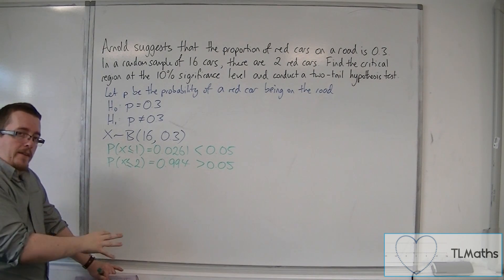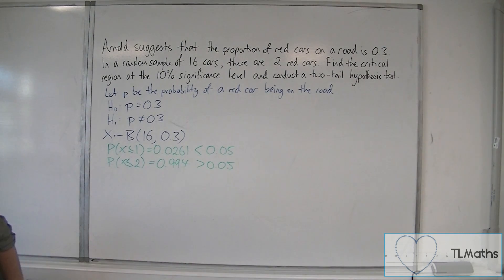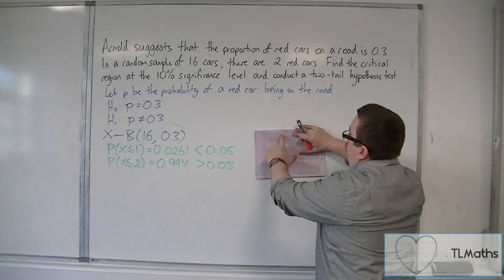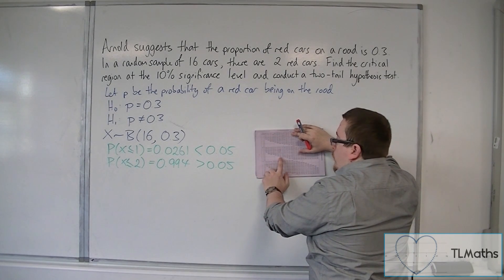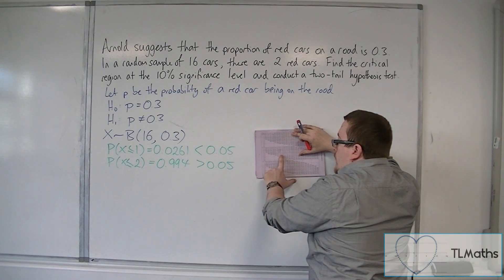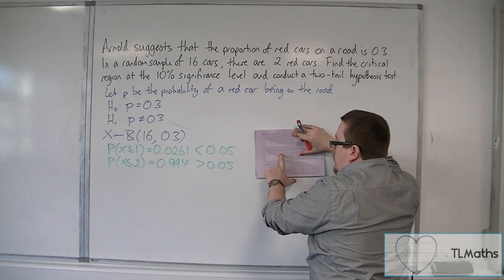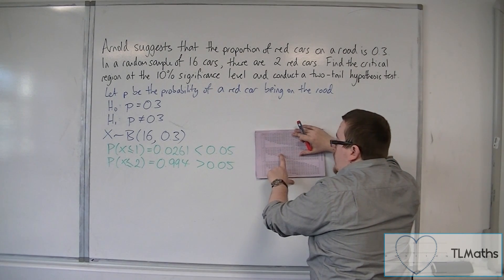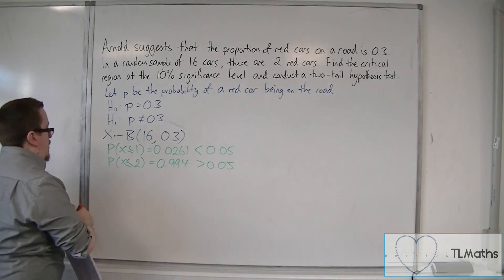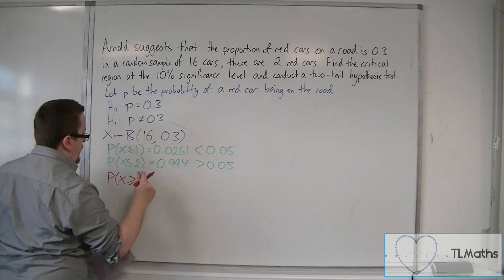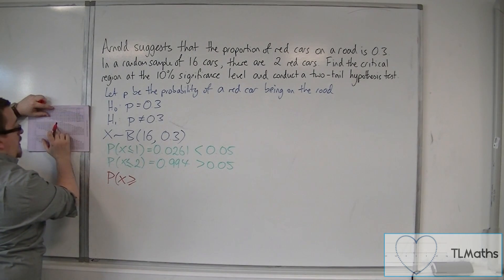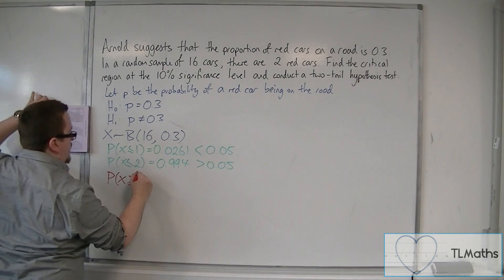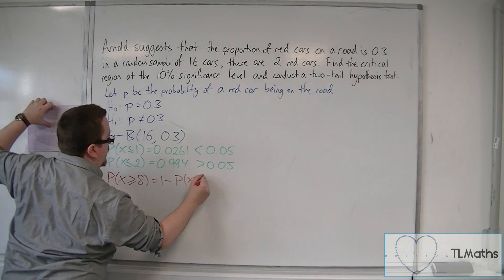Once we've done that, we then need to find the crossover from the other direction. Now, we're looking at probability of 0.3, but we're looking at 5% from the top. So, we're looking at 0.95. On the tables, I can see 0.9256 and 0.9743. So, we have the probability of X being greater than or equal to 8 is 1, take away the probability of X being less than or equal to 7.